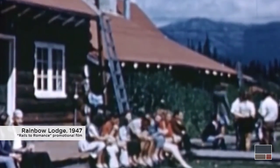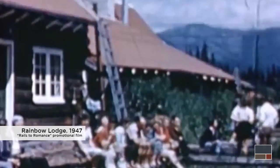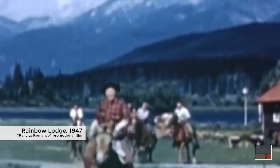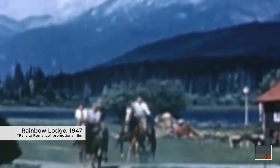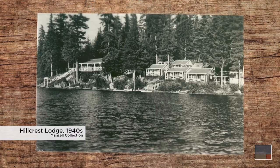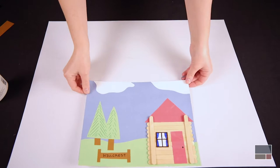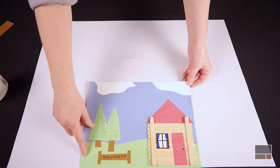People visited Rainbow Lodge in the summer to fish, hike, swim, and do many of the activities you might do in the summer. It got so popular that other people built lodges and cabins around Alta Lake to visit in the summer. Most of these lodges and cabins were built from wood.